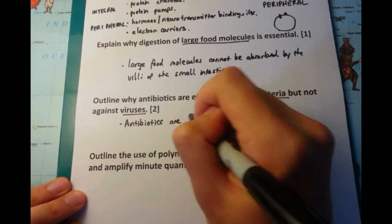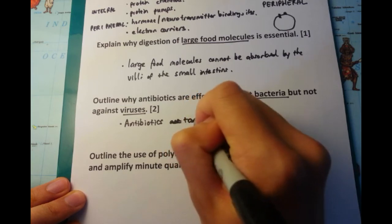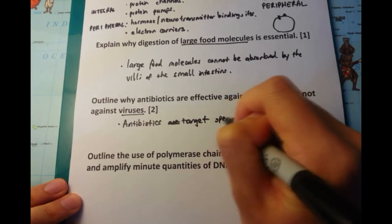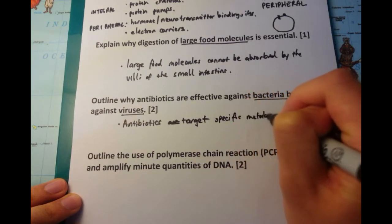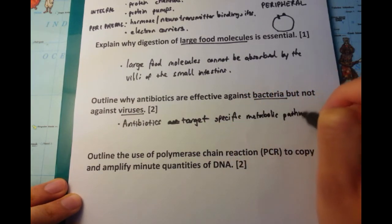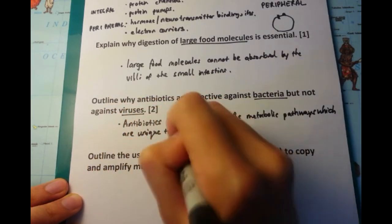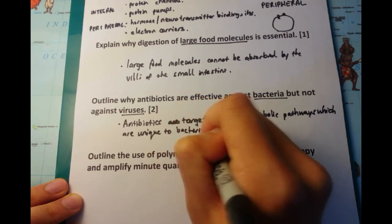So the first thing we're going to talk about is that antibiotics, they target specific metabolic pathways which are unique to bacteria. And I've given the example of penicillin, which acts on the cell wall. Now if you remember, the cell wall is something which is not present in human cells, so therefore penicillin is very effective against bacterial cells but not human cells.